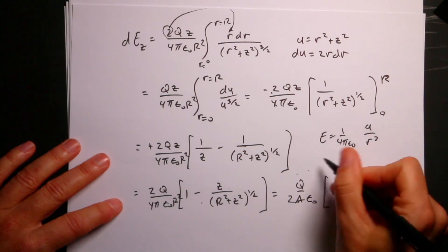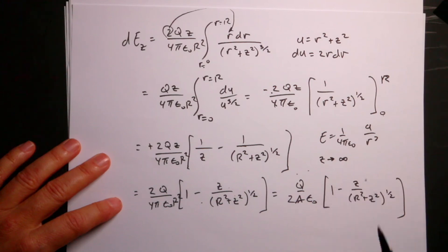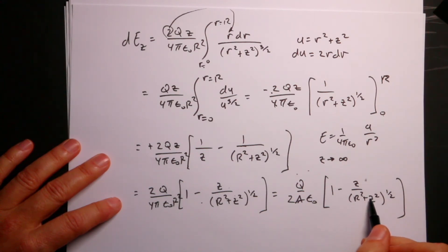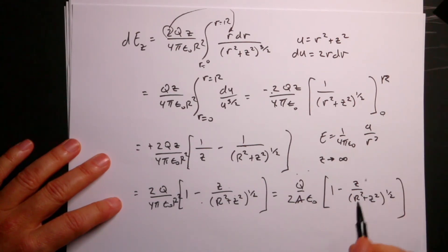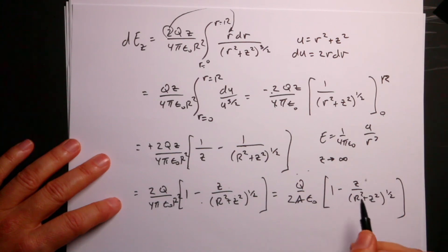What if z goes to infinity — I get really far away from the disk? The electric field should go to zero. As z gets really big, I have z on top, but I also have z squared inside the square root. If I take the derivative and use L'Hôpital's rule, I get a one on top and still another z in the denominator because of z squared, so I get one over z, which does go to zero. Good.